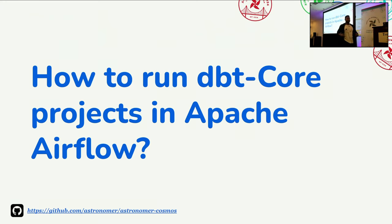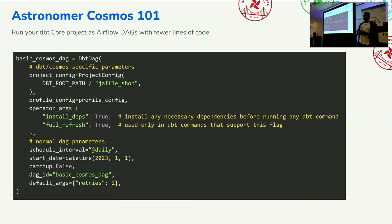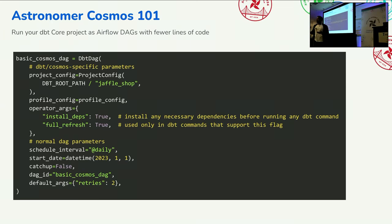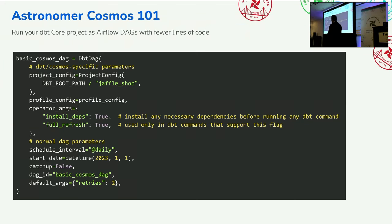That's where Astronomer Cosmos comes to the rescue. Cosmos is a library that makes it super easy for any data engineer or analytics engineer to author their dbt project, and it makes a seamless integration between them. You use the same logic and the same idea as Apache Airflow — it doesn't change a bit. You basically say where your project resides, give some additional parameters, and then your dbt project is running.